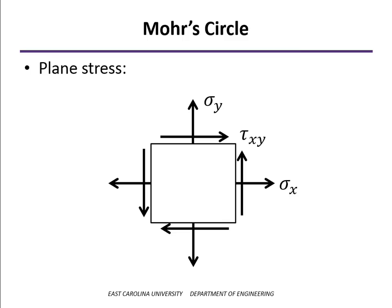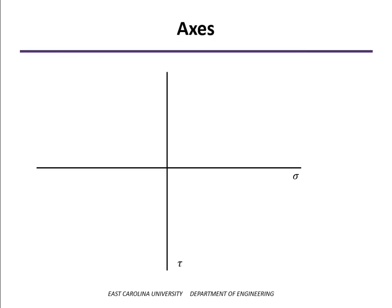We're going to take these stresses and plot them on a set of axes with the normal stress on the horizontal and shear stress on the vertical. I tend to plot the shear stress as positive downward. Some texts actually plot it upward, and we'll see what the difference is when we get to the end — it won't make any difference as far as calculation of the principal stresses.